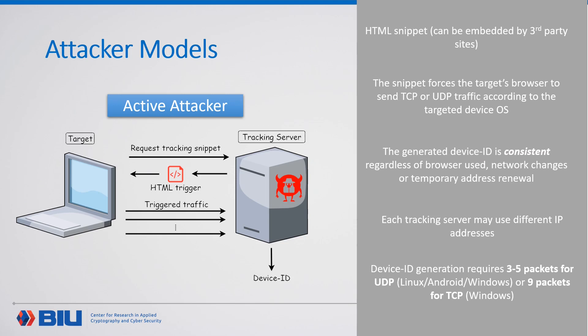Let's present the attackers. We begin with the active attacker. This attack is based on an HTML snippet that can be embedded by any third-party site. This snippet forces the target to emit IPv6 traffic to the tracking server, and the result is a consistent device ID regardless of the browser used, network changes, or temporary address renewal. This attack requires just 3 UDP packets for Linux or Android, 5 UDP packets for Windows, or 9 TCP packets for Windows.